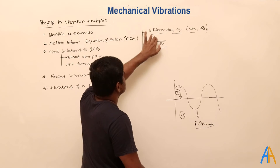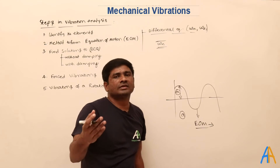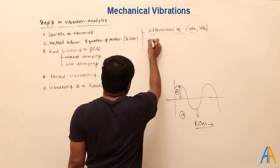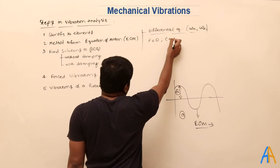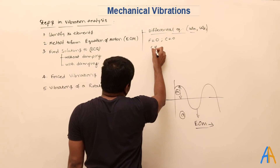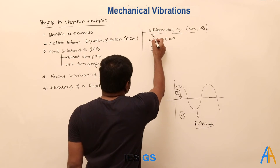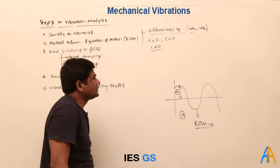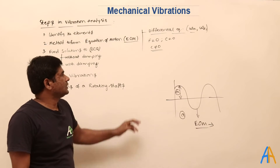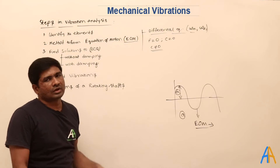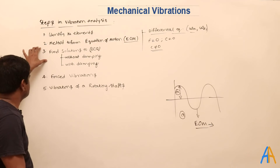To form the differential equation, we will consider different types of systems. A free system means there is no external force acting on the system. Sometimes we take free vibration without damping, where c equals zero, and in other cases c is not equal to zero, meaning there is damping. Once you find this differential equation — the equation of motion, or EOM — you need to solve it, as it is a double differential equation, and finally you will get a harmonic curve.